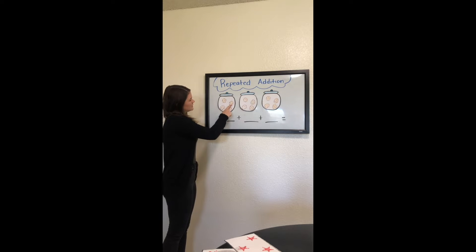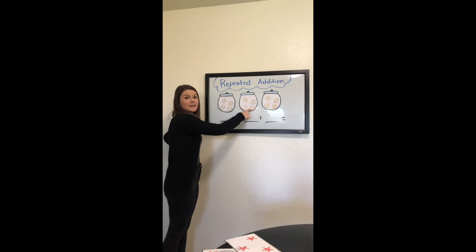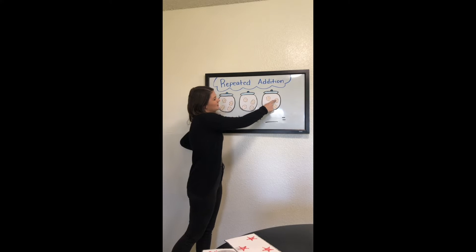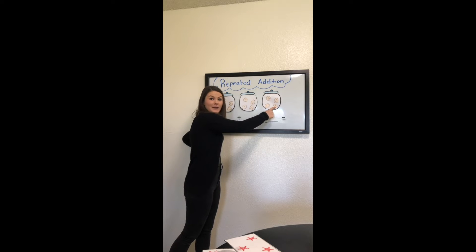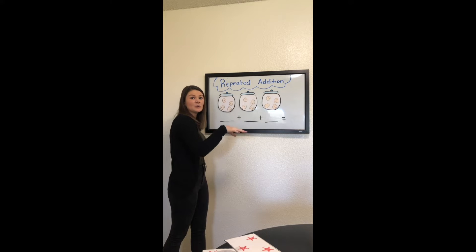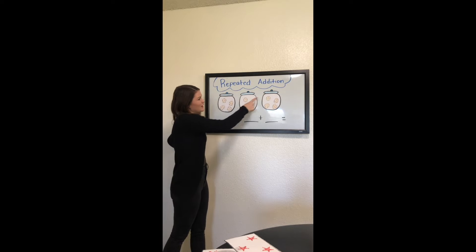One, two, three, four in the first jar. One, two, three, four in the second jar. We're good so far. One, two, three, four in the third jar. So there's four in each of these jars, which means each jar has an equal amount. They're all the same — four, four, four.